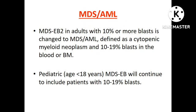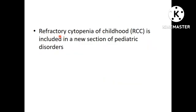MDS-AML is a new category used for MDS with excess blasts 2 in adults. In the pediatric population (under 18 years), MDS with excess blasts will continue to include patients with 10–19% blasts, and the MDS-AML category is not applicable for pediatric patients. This distinction exists because the biology of childhood MDS is different from adult MDS. Refractory cytopenia of childhood is included in a new section of pediatric disorders.